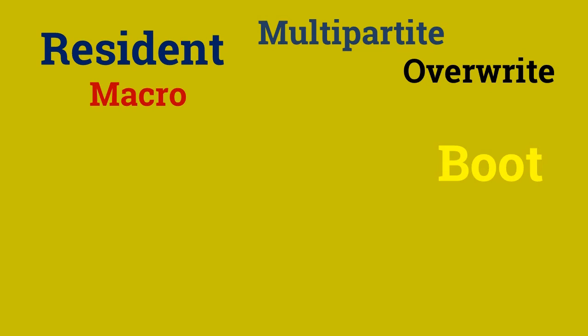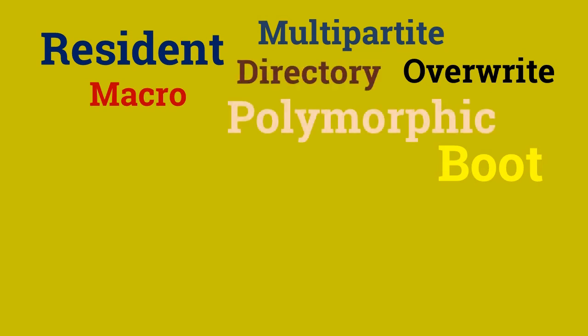There are directory viruses and polymorphic viruses, which encrypt themselves and hence become difficult to be detected by antivirus, but the virus engine remains unencrypted. In metamorphic viruses, they are even harder to detect because they encrypt even their virus engines.